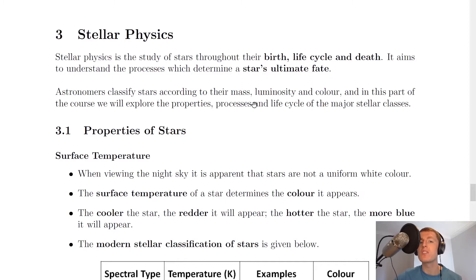Astronomers classify stars according to their mass, luminosity and color and in this part of the course we will explore the properties, processes and life cycle of the major stellar classes.